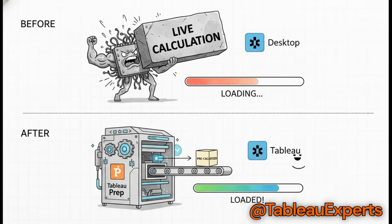First, let's talk speed. By moving all that heavy lifting into your prep flow, you're essentially pre-calculating the answer. So instead of Tableau having to figure out a complex moving average on the fly every single time someone opens the dashboard, it's just reading a value that's already there. With large datasets, the performance boost is just dramatic.